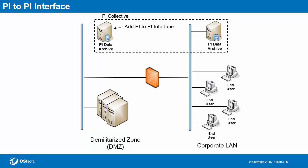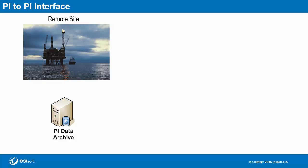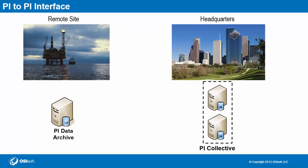Moving on to different components, we've seen the PI to PI interface before. In a previous example, we had a PI collective separated by a firewall. This was to prevent users from being granted access to the DMZ and rather use a PI data archive on their own network. The PI to PI interface can also be used to send data between just two standalone PI data archives or even two collectives. So let's say a PI data archive exists at some remote site far away. If the corporate headquarters wants access to the data, a PI to PI interface can be set up to automatically transfer data from the PI data archive at the remote site to the PI collective at headquarters. This prevents the need to grant users at headquarters special access to the PI data archive at the remote site.